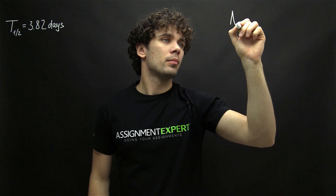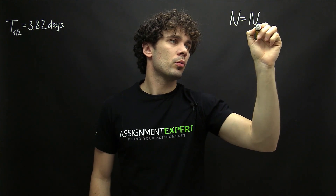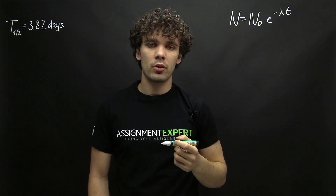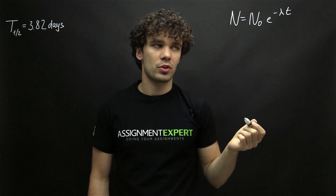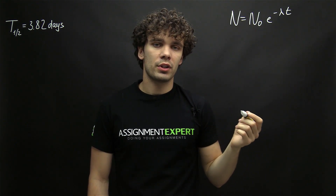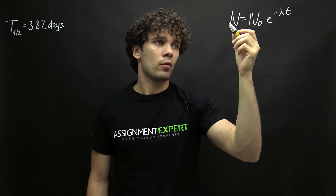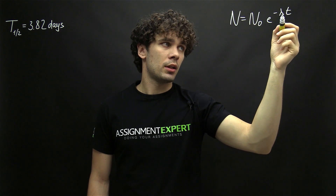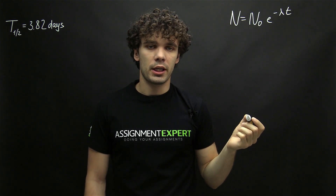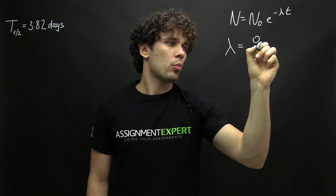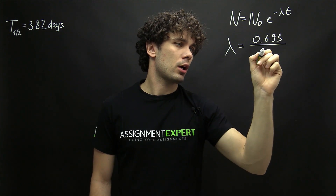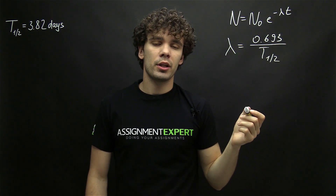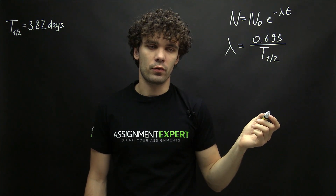It goes like this: n equals n₀ times e to the power of negative lambda times t, where n₀ is the amount of radium at the beginning, at time equals 0. n is the amount of radium after decay, so we have 60% decay — therefore here we have 40% and this will be 100%. Lambda is the coefficient of radioactive decay, and it is equal to 0.693 divided by the half-life. In our case, this is the half-life of radium. And t is the time needed for this decay to happen — the time we're searching for.